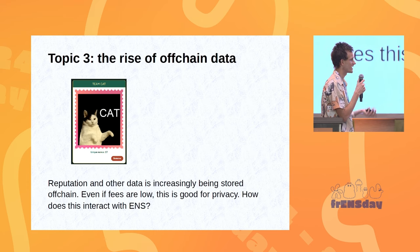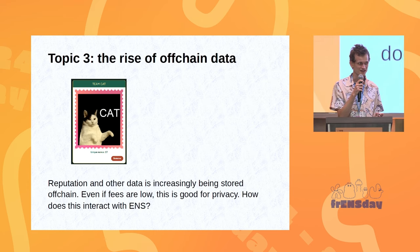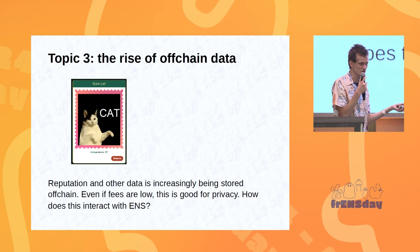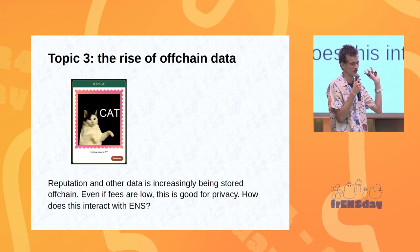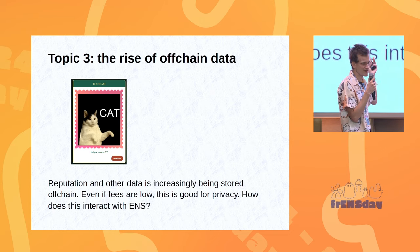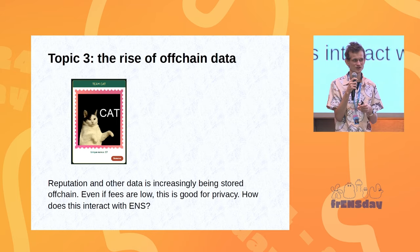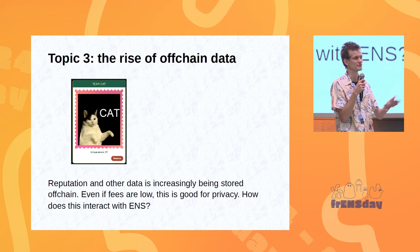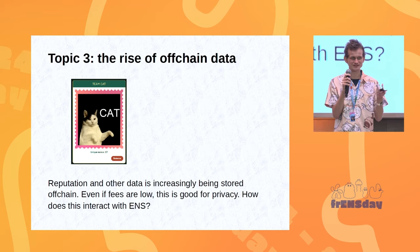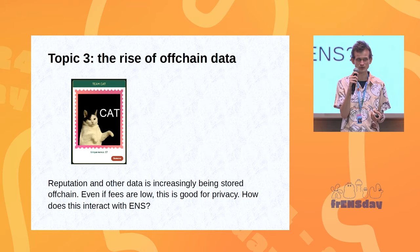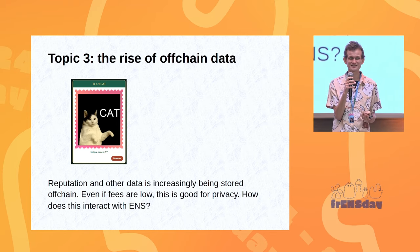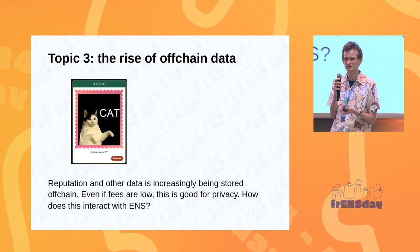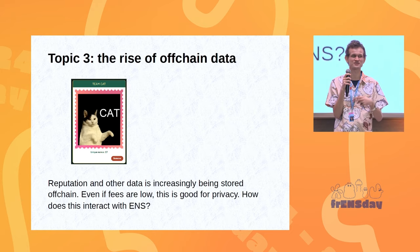Topic three is the rise of off-chain data. There's increasing amounts of work in storing reputation data and other kinds of data off-chain. ZuPass started a year and a half ago and is still being used in a bunch of places, and there are other projects doing more and more off-chain data storage. Today relatively little of this is happening because dumping everything on-chain even when you don't have to is just so convenient. And when an on-chain transaction is 0.4 cents, it's like, do you even care?